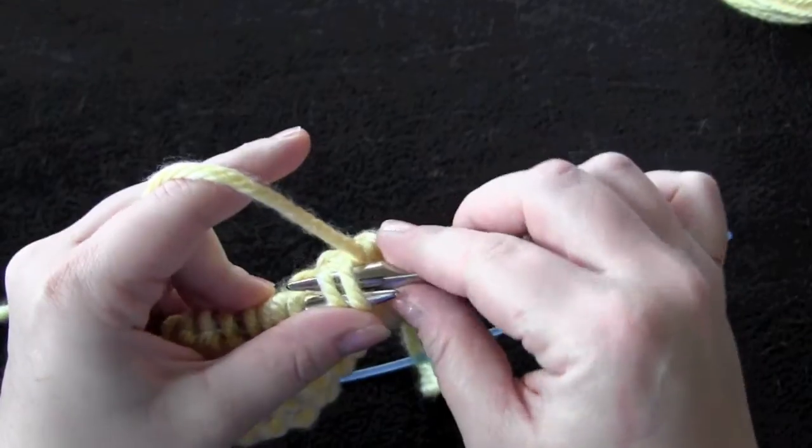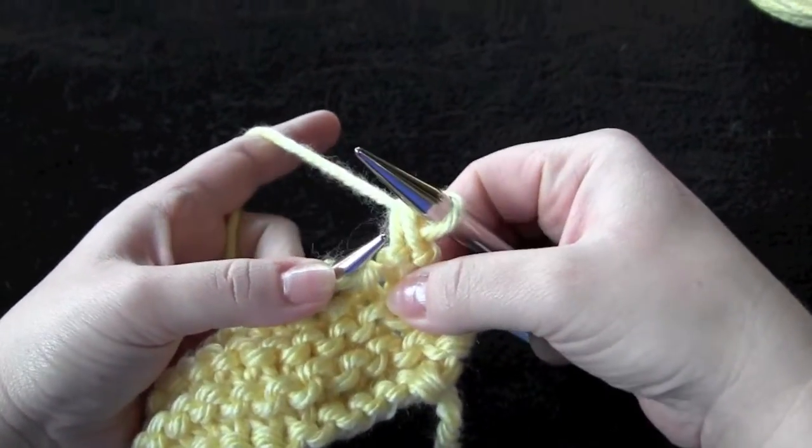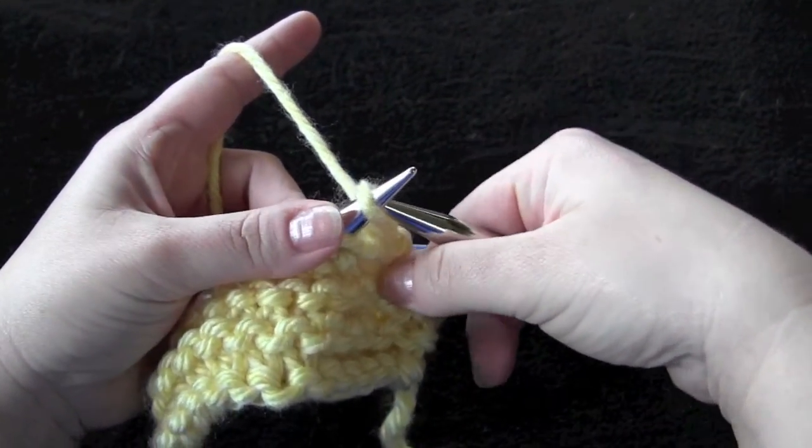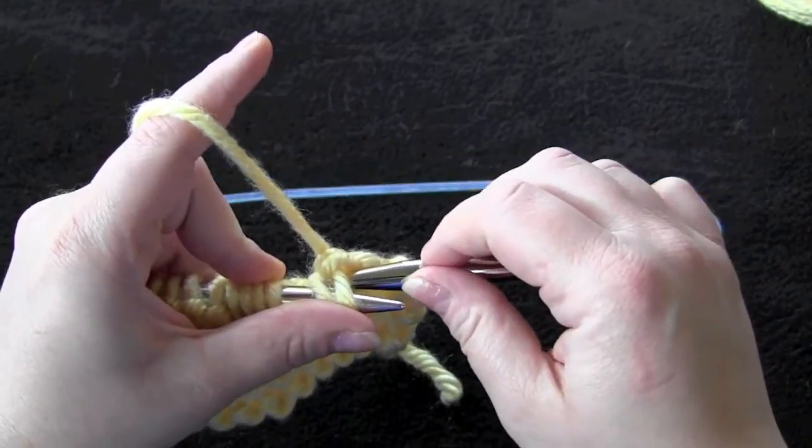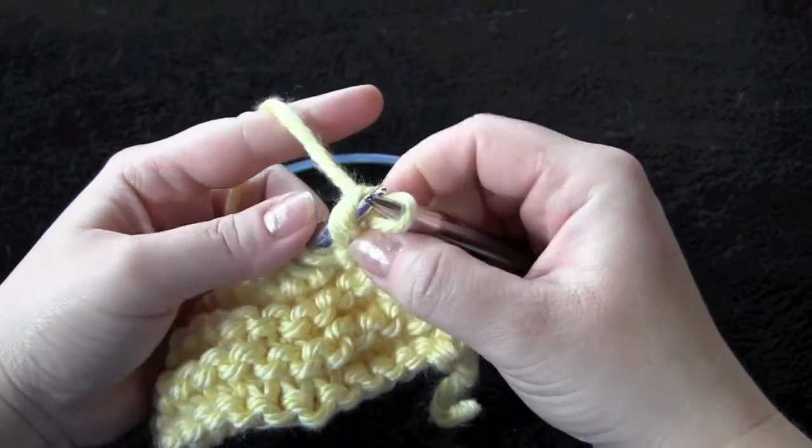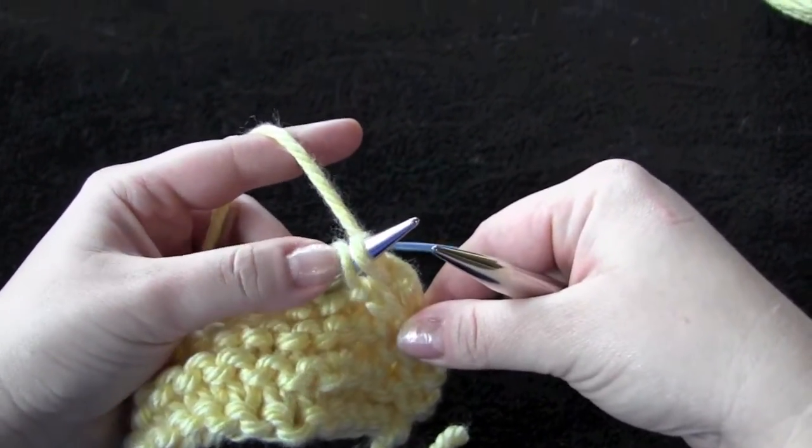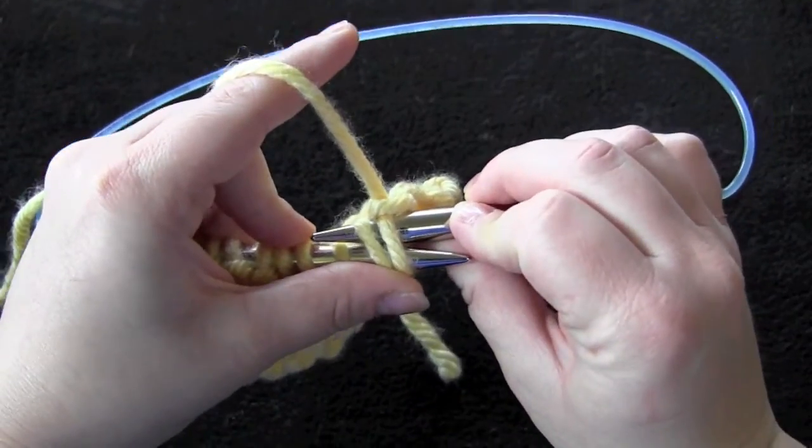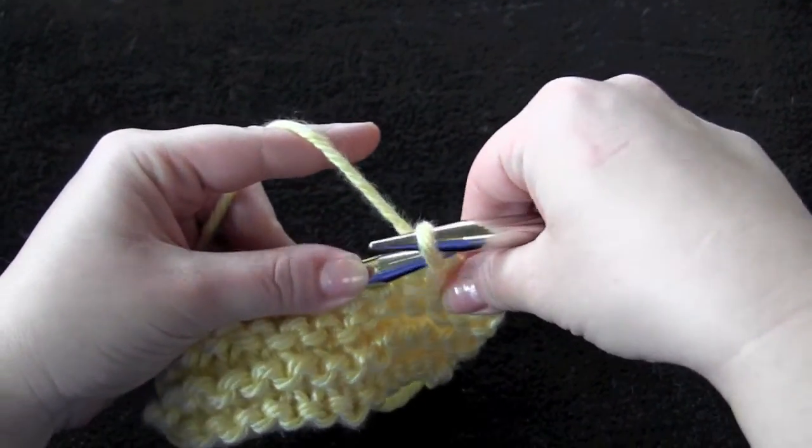You'll knit two together through the back loop and then you'll return the stitch that's on your left needle to the right needle just like that. And then again you'll knit two together through the back loop, stitch from the right needle goes back to the left needle. That's all you're doing, knitting two together through the back loop, returning the stitch to your left needle to be worked again.